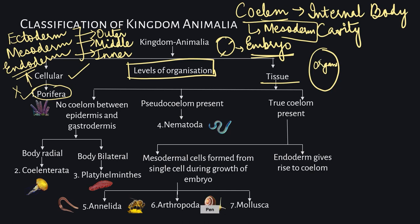To understand the coelum, imagine a cavity with organs A, B, C, and D inside it. This cavity ensures that these organs are protected — they are enclosed in a structure. Although they are inside the body, they are also protected within an internal layer, and there is fluid inside the coelum which further enhances and provides extra protection to the internal organs.